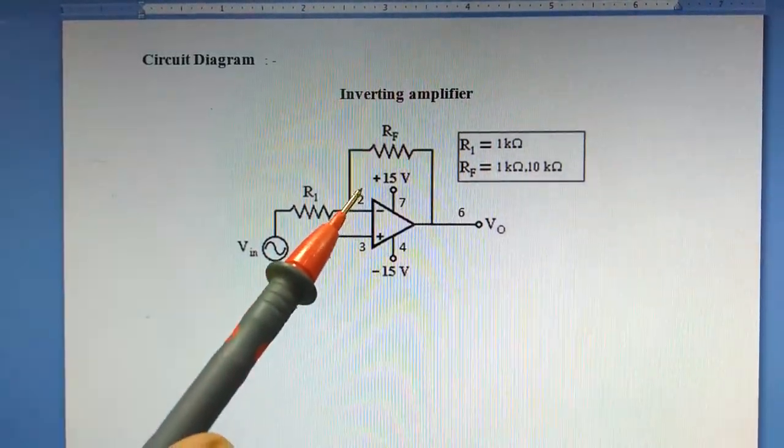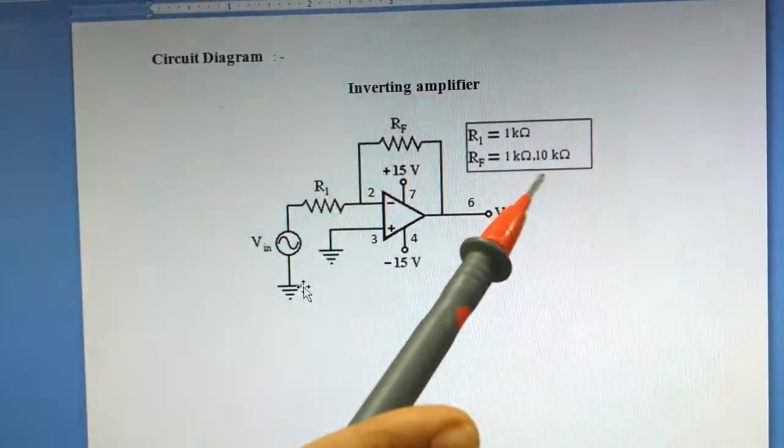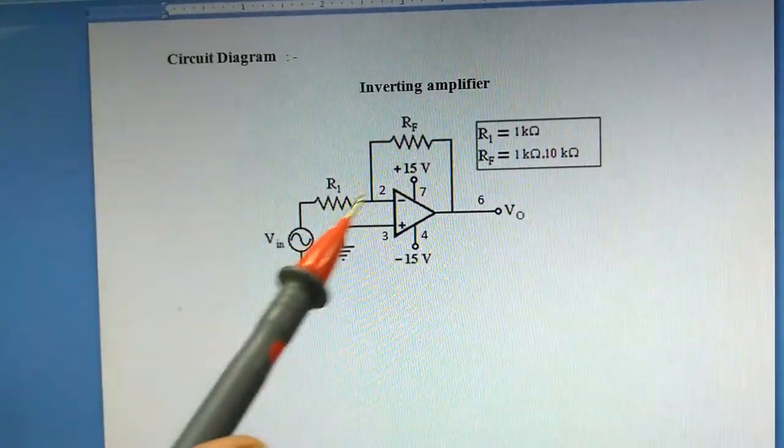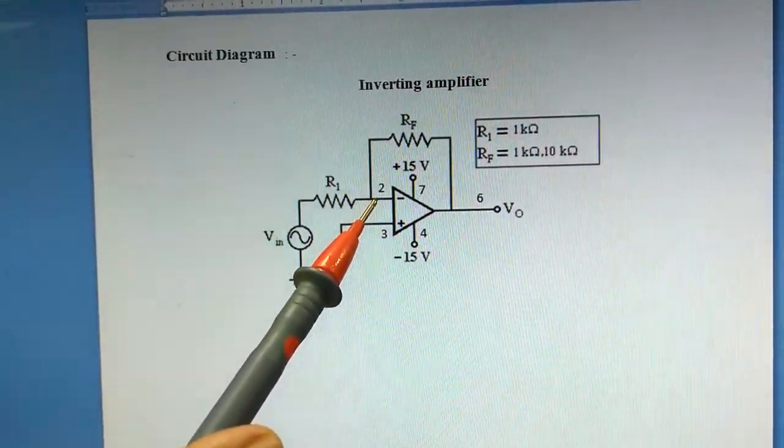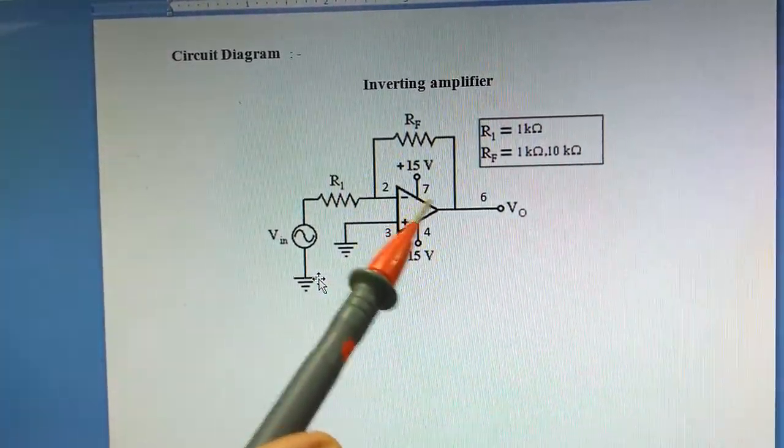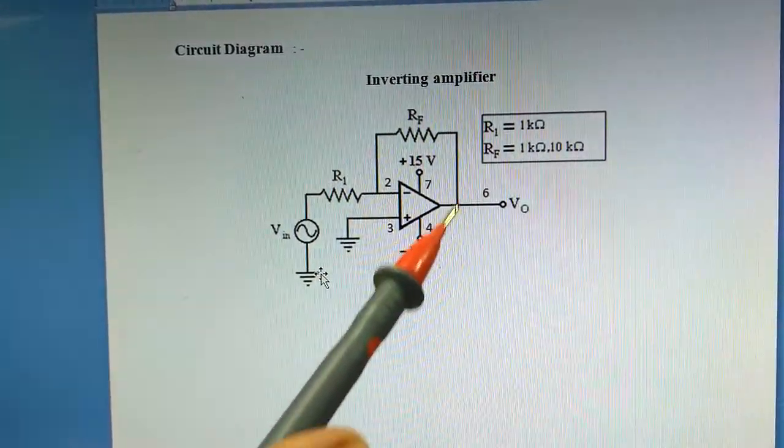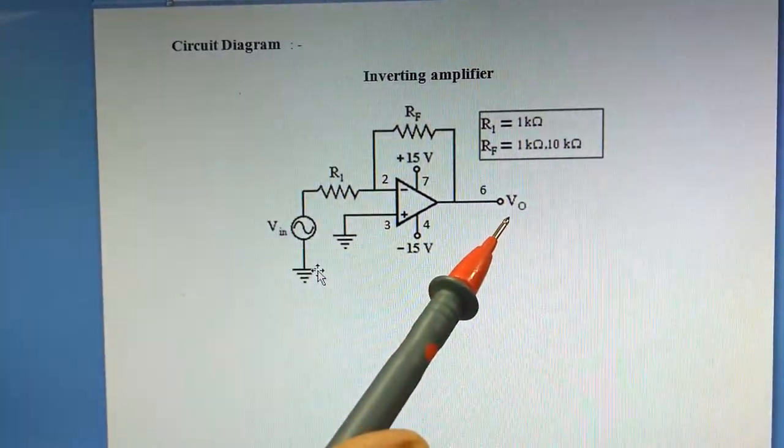Inverting amplifier. For inverting amplifier, R1 is 1k and Rf we have selected 10 kilo ohms. Input is given to the inverting terminal, that is pin number 2, and pin number 3 is grounded. Pin number 7 and 4 are supply voltages plus 15 minus 15, and pin number 6 is output.